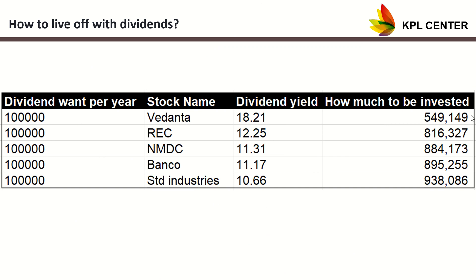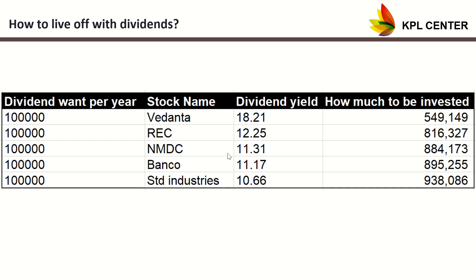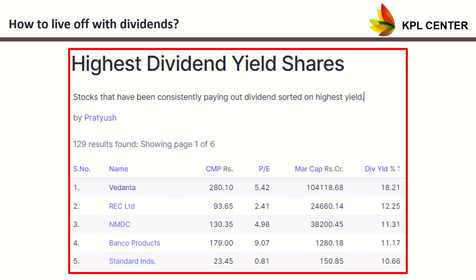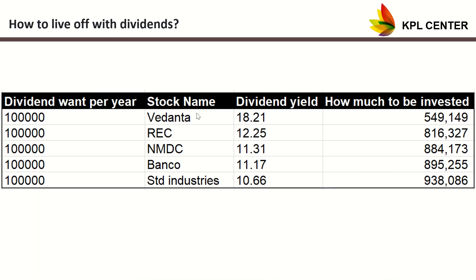If you look at this, the dividend yield is 18.21% — up to 50% of the dividend value would give a dividend yield. The dividend yield ranges from 11.25% to 10.15%. NMDC has 11.31% in the core company. I've invested 8.84 lakhs. If you invest 8.84 lakhs, the number of stocks will be divided. For example, Banco Products and Automobile products — if you invest 8.95 lakhs, the stocks will be allocated. Standard Industries is at 9.38%; investing 8.99 lakhs, you can add 4.66 lakhs, and the stocks will be divided.